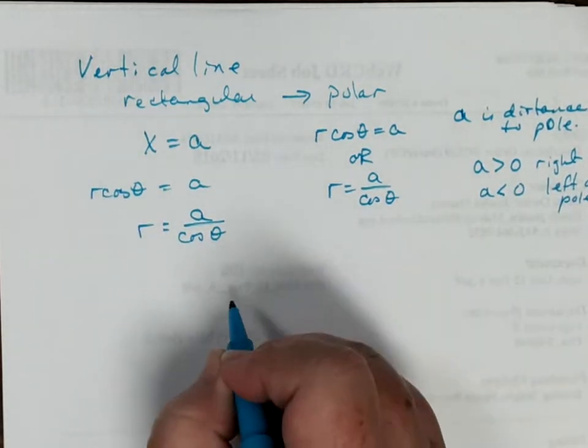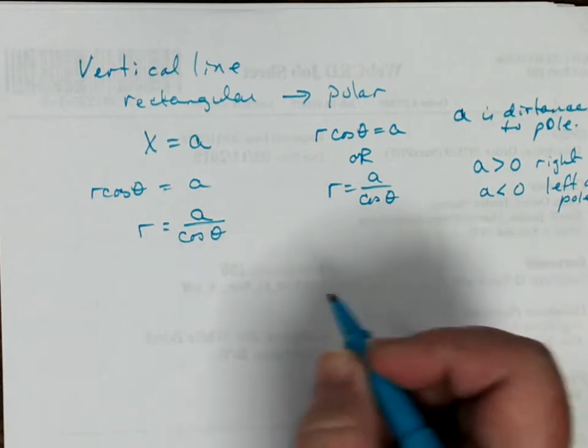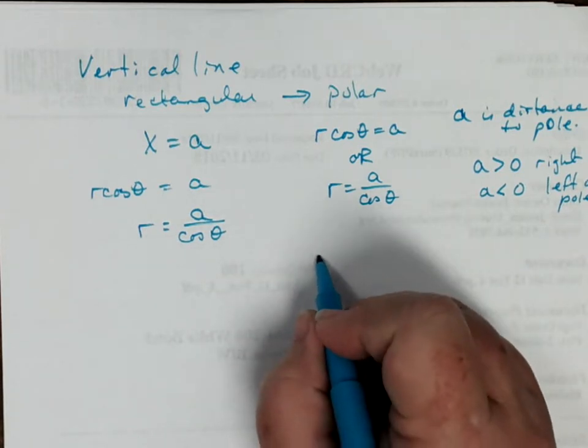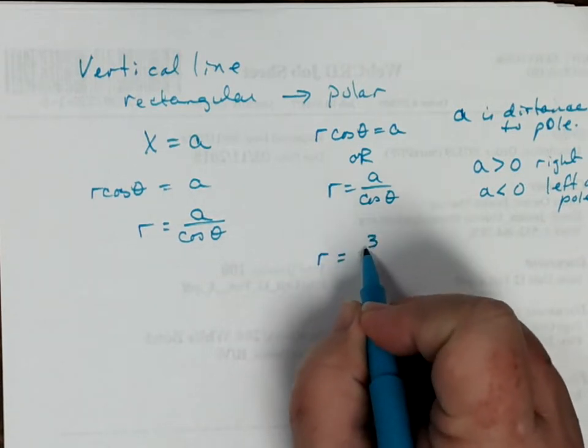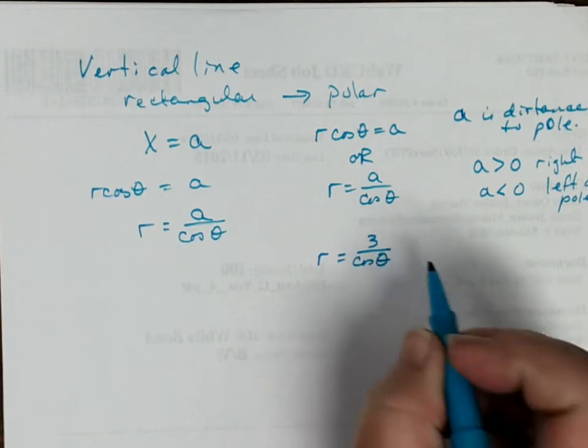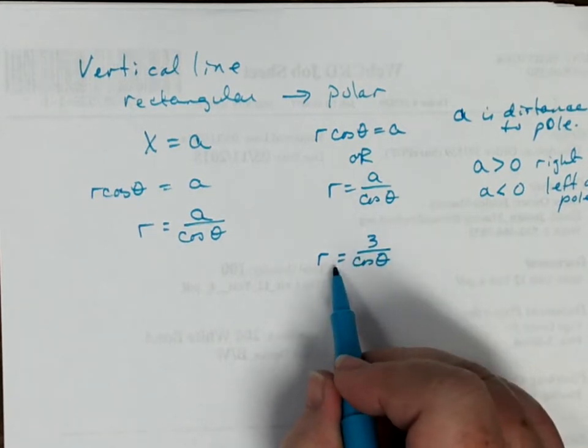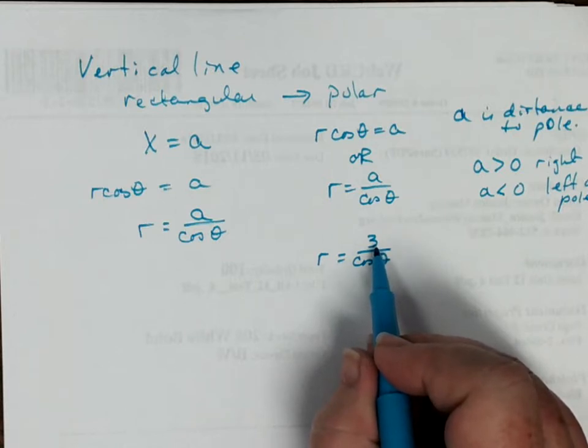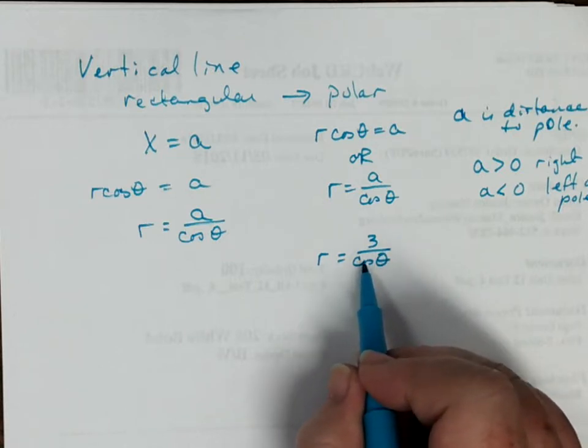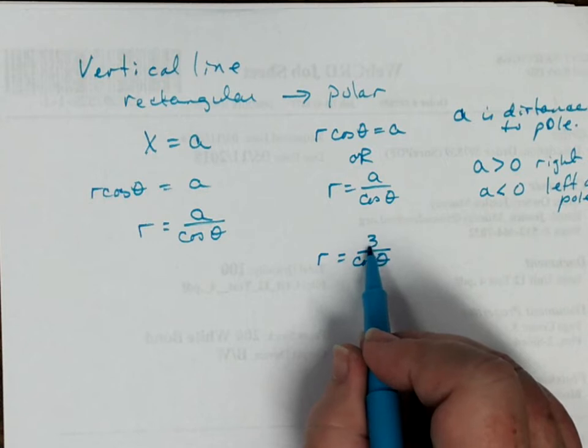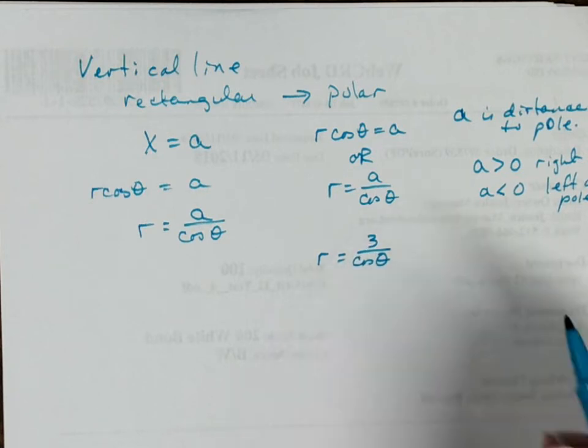So a vertical line, for an example, we might have r equals 3 divided by the cosine of theta. And that would be a vertical line passing through 3 to the right of the pole, passing through the polar axis 3 to the right of the pole.